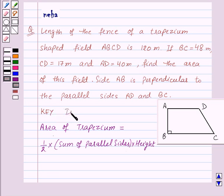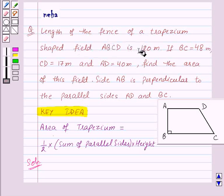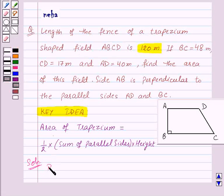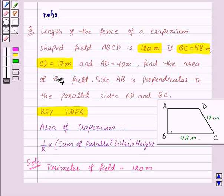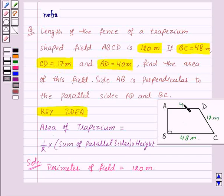Now let's see the solution. In the question, we are given that the length of the fence of the field is 120 meters. That means the perimeter of the field is 120 meters. BC is 48 meters, CD is 17 meters, and AD is 40 meters. AB is unknown, so first of all, let us find the length of AB.